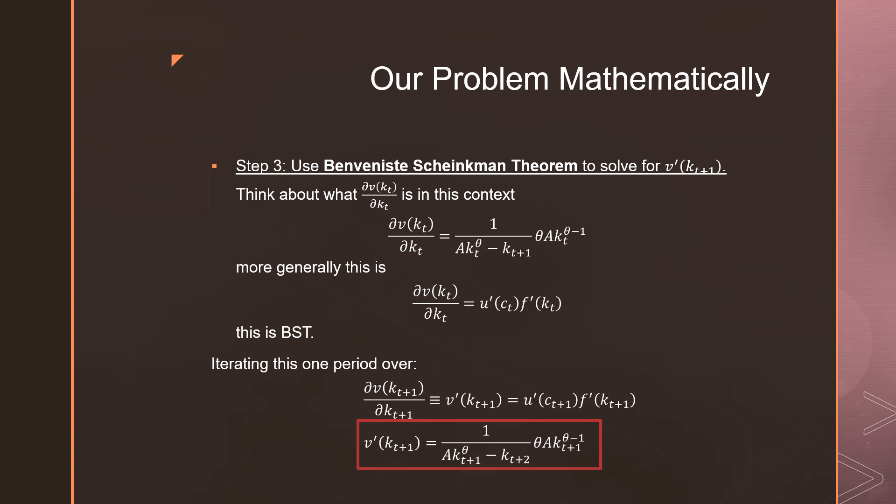This is the Benveniste-Scheinkman theorem, this derivative right here. Iterating this over one period, we go and get the following result, which is just the same thing that I said before, just changing the time subscript here just to be one period over.